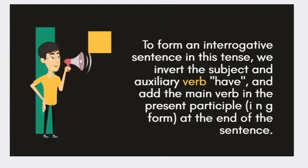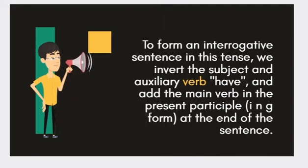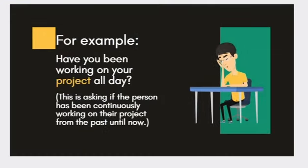To form an interrogative sentence in this tense, we invert the subject and auxiliary verb have, and add the main verb in the present participle (ing form) at the end of the sentence. For example: 'Have you been working on your project all day?' This is asking if the person has been continuously working on their project from the past until now.